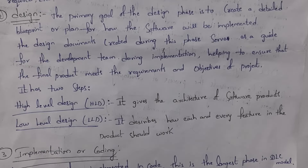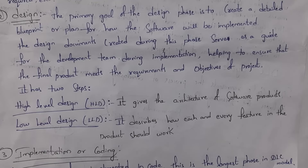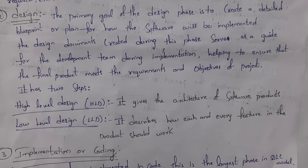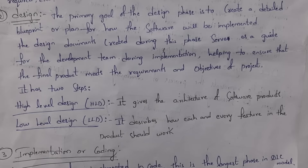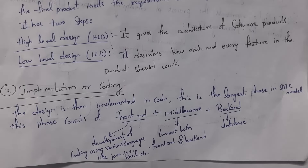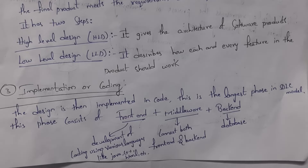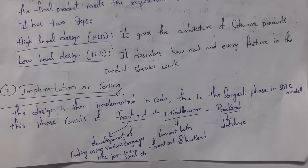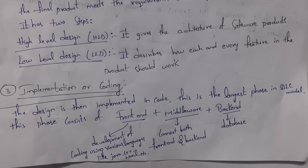High level design displays the complete software architecture, whereas low level design describes how each and every feature should work in the software. For example, in a college software, the login form is one feature, student login form is another, faculty login form is another, and student attendance is another feature. The third phase is implementation or coding — by seeing the blueprint, software developers start developing code. This is one of the longest phases, containing frontend, middleware, and backend components.